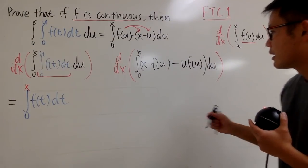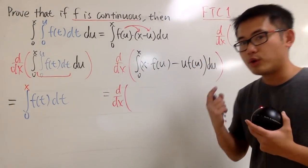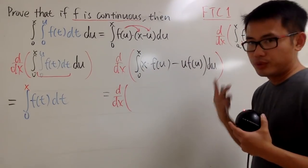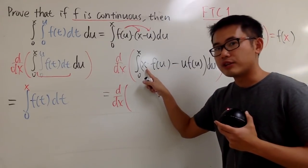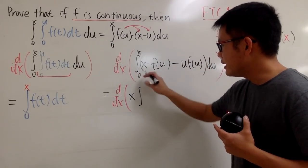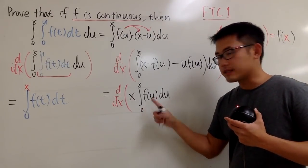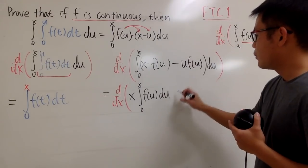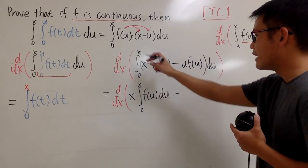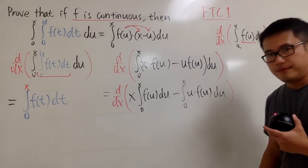I will be differentiating, so pay really close attention to what variable is what. This integral is in the u world. I'm going to split this into two integrals. In the u world, x doesn't matter — you can actually put it outside. So I can take the x out, because we're in the u world. Then this is x times the integral from 0 to x of f of u du. This is a function in terms of x, and it's x times this function. And then we will have minus the integral from 0 to x of u times f of u, du.